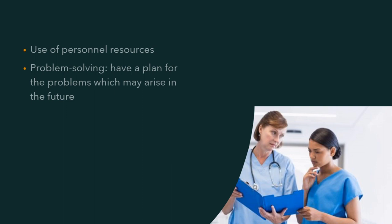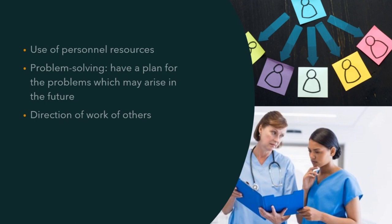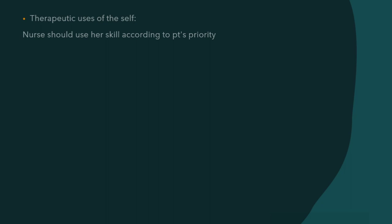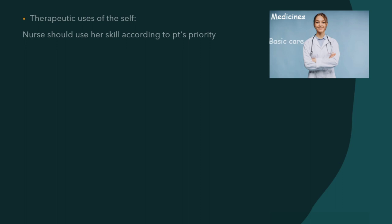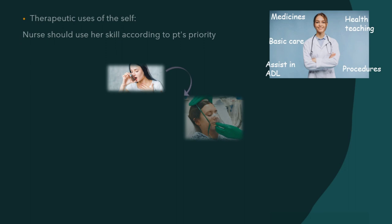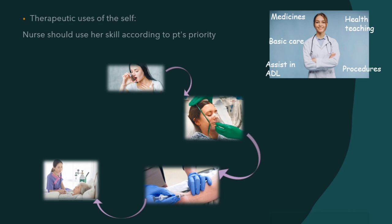Then direction of work to others — distribution of jobs to the respective healthcare team members is important so that it doesn't create confusion later. Then therapeutic uses of the self. A nurse can do many things: perform procedures, administer medicines, assist the patient in daily living activities, give health teaching, provide basic care, give moral support, and counselling. But the nurse should use her skills according to the patient's priority. For example, a patient suffering from respiratory distress must first receive oxygen, then investigations if needed, then assessment, and then health teaching — that is the therapeutic use of self.